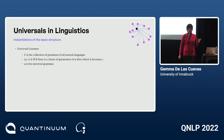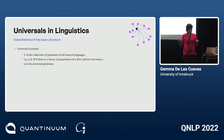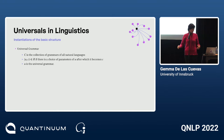The universal grammar is clearly also an example: C is the collection of all grammars of natural languages, and the universal grammar is not itself a grammar but a metagrammar with parameters. When those parameters are fixed, it specializes to a target grammar — so it can specialize to any grammar.